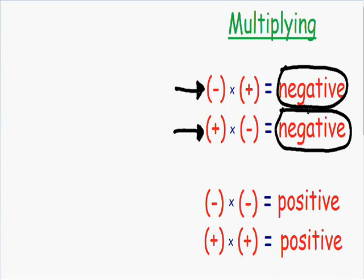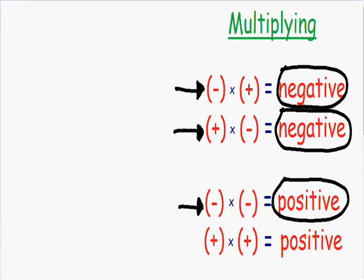Now let's talk about what happens when you multiply two negative numbers. A negative times a negative is going to give you a positive answer — you could say the negatives cancel each other out. And obviously, a positive times a positive is also going to give you a positive answer.